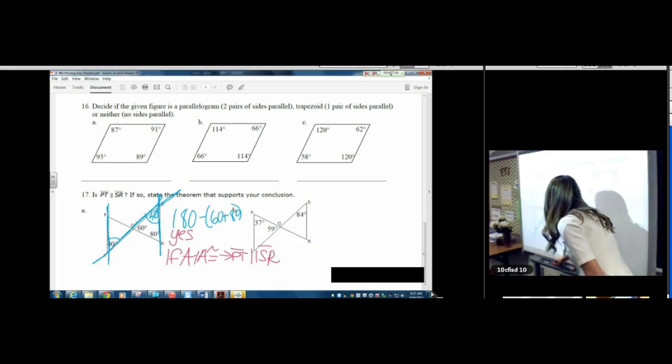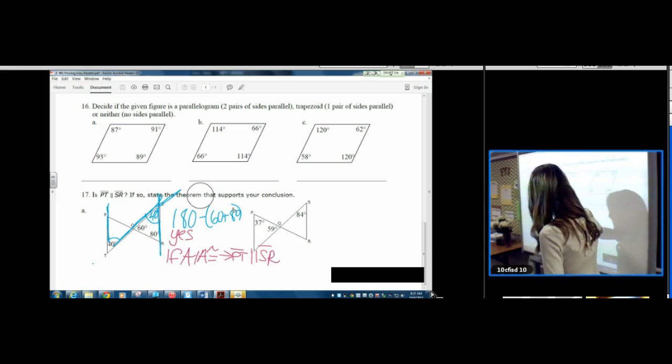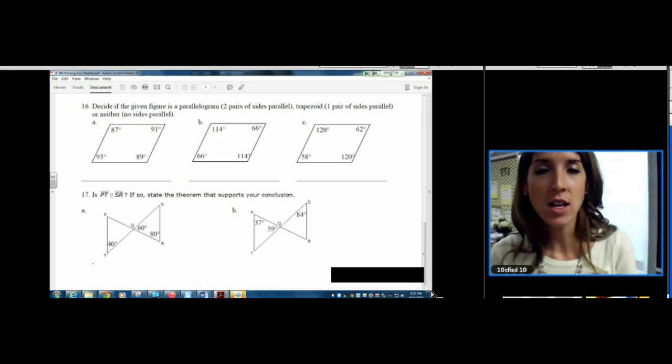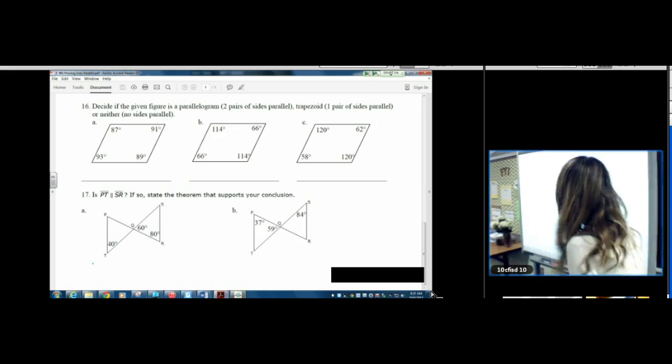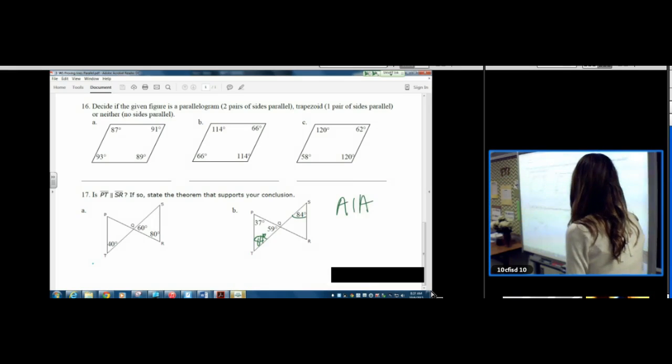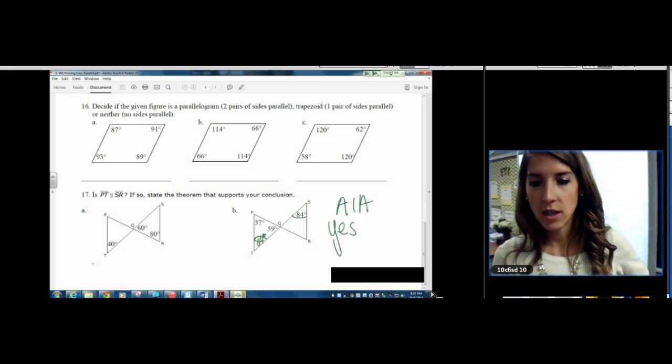Likewise, you would do the same thing on part B. You would find the missing angle of the triangle. You would do thirty-seven plus fifty-nine. You would subtract it from one eighty. And you would get eighty-four. So we have another pair of alternate interior angles. The answer is yes.